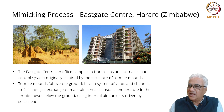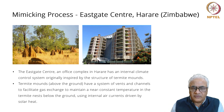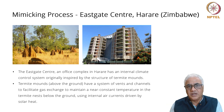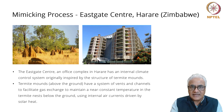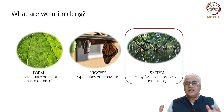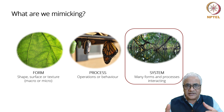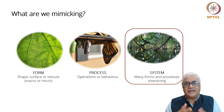Much less energy was used. I would implore you to just Google Eastgate Mall — there are some beautiful videos that will help you understand the exact process Mick Pierce used. So there are three things we can imitate: form, process, and system. When you say system — which you will learn later in systems thinking — it means connected elements. Elements of a system are connected and interdependent on each other.